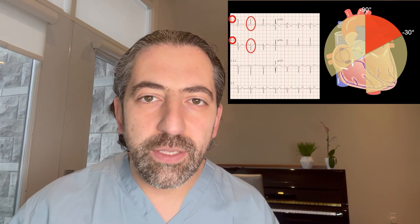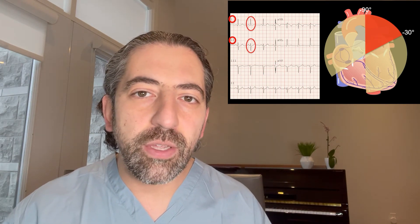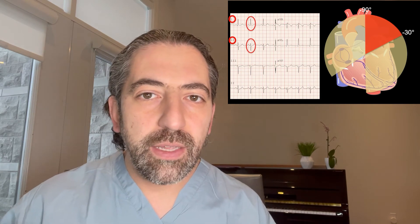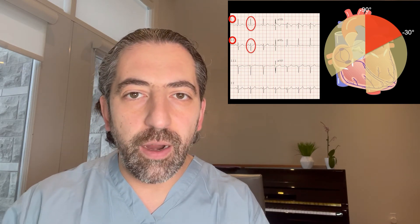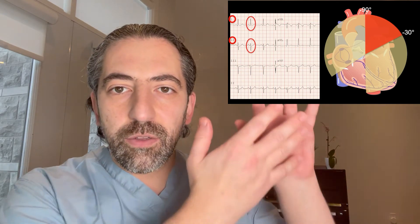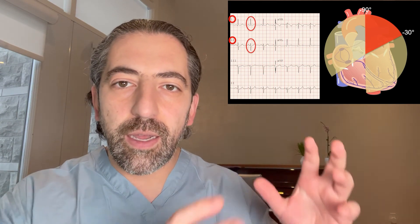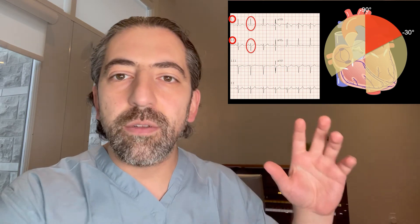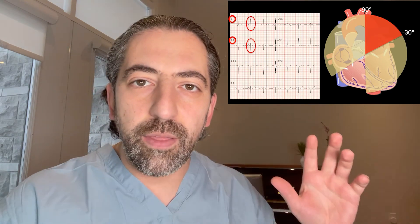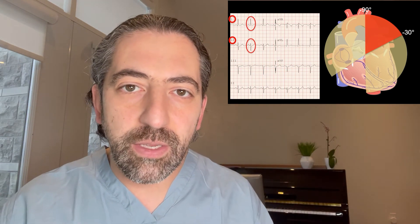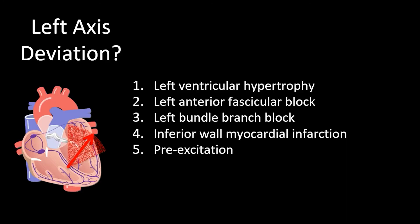There are certain conditions that cause left axis deviation. These conditions either reduce the electrical signals in the bottom of the heart so that more signal travels to the top left, or they increase the electrical signals on the left side of the heart so that more signals travel towards the left than the right. Some of these conditions include left ventricular hypertrophy, left anterior fascicular block, left bundle branch block, an inferior wall myocardial infarction, or pre-excitation that occurs in the presence of an accessory pathway.